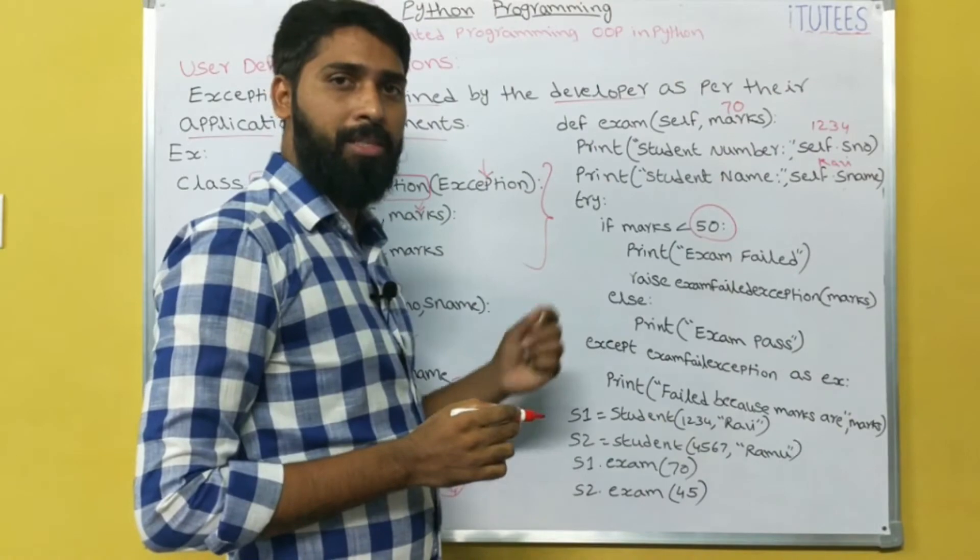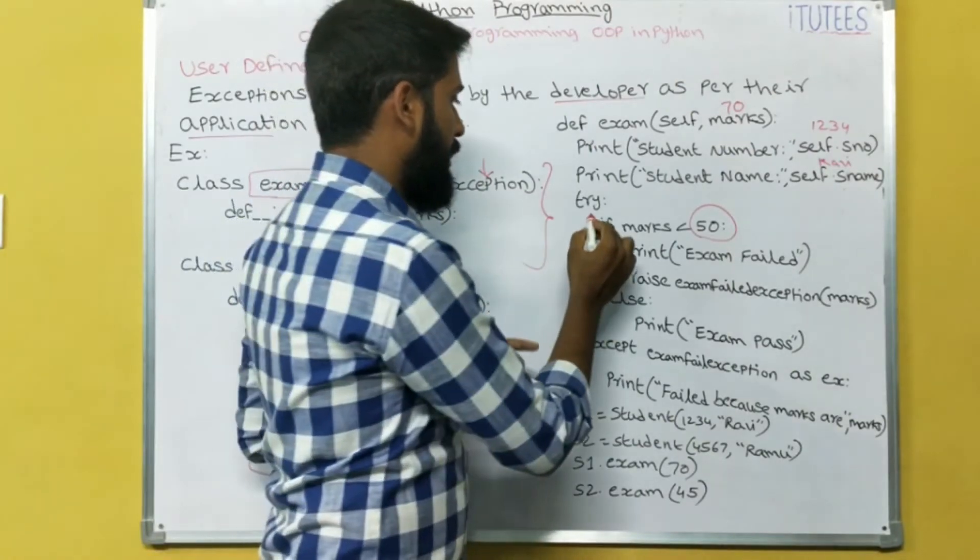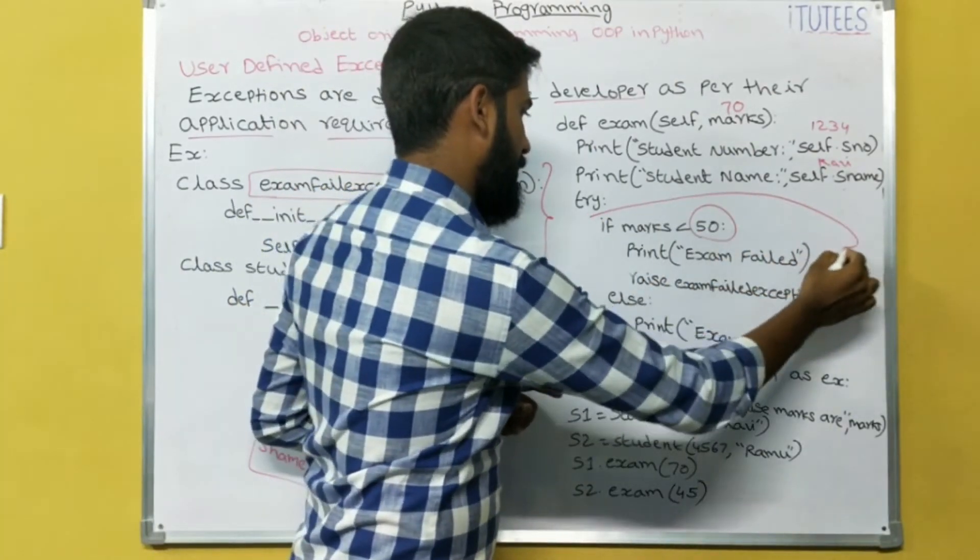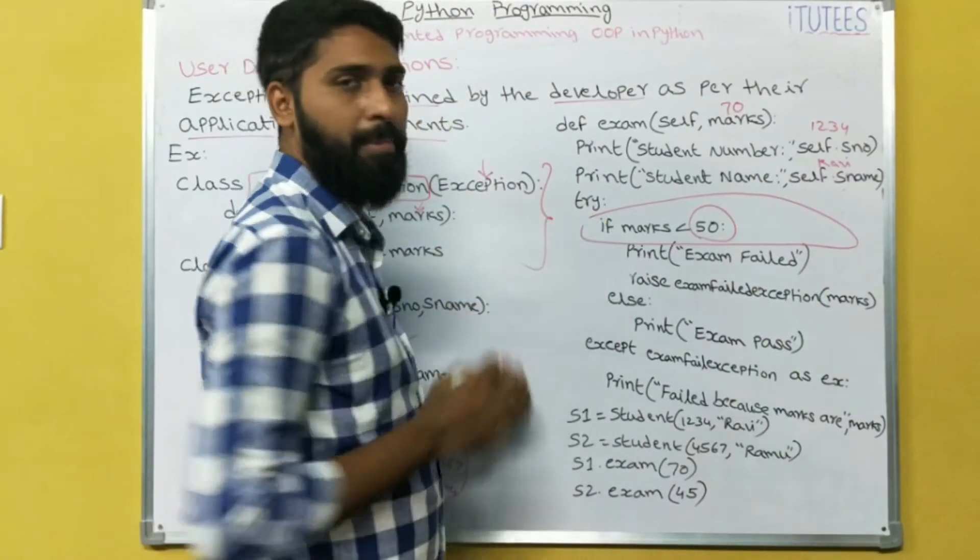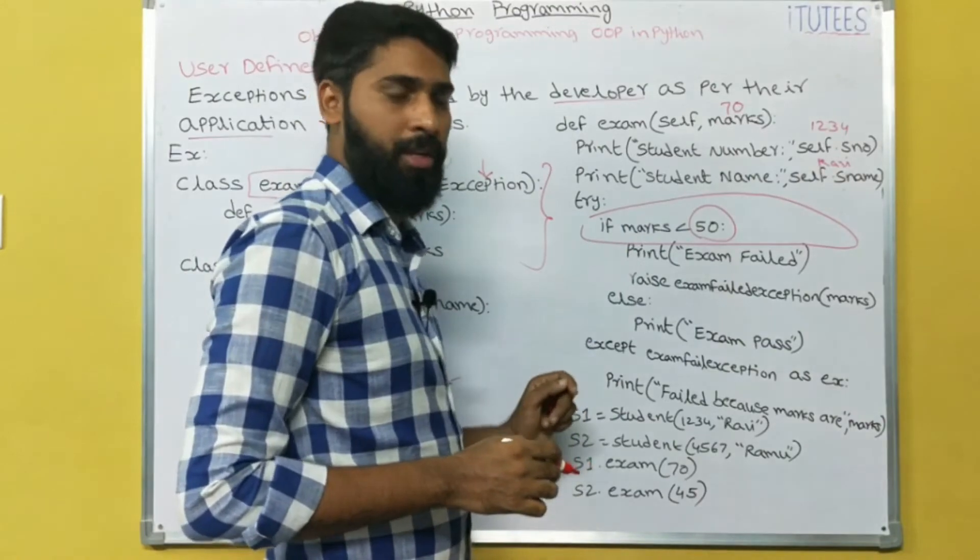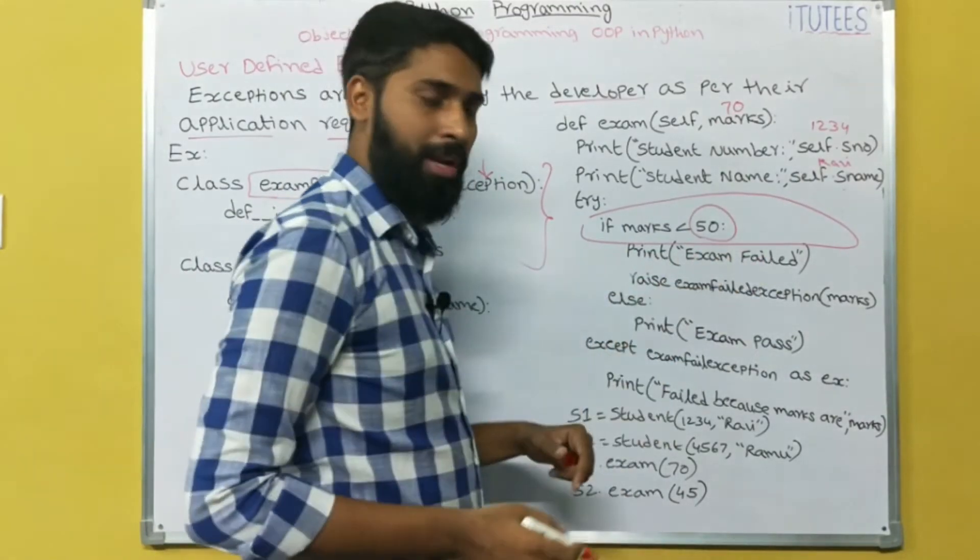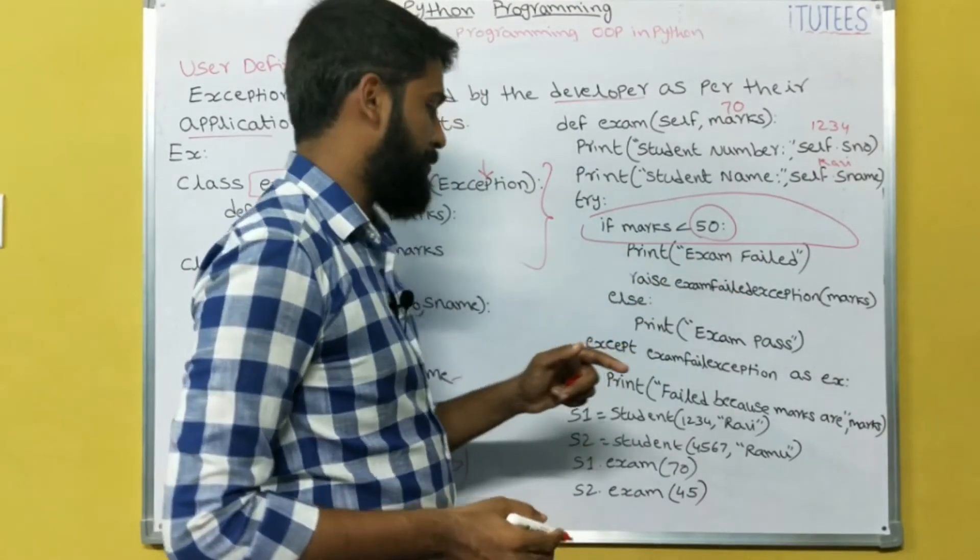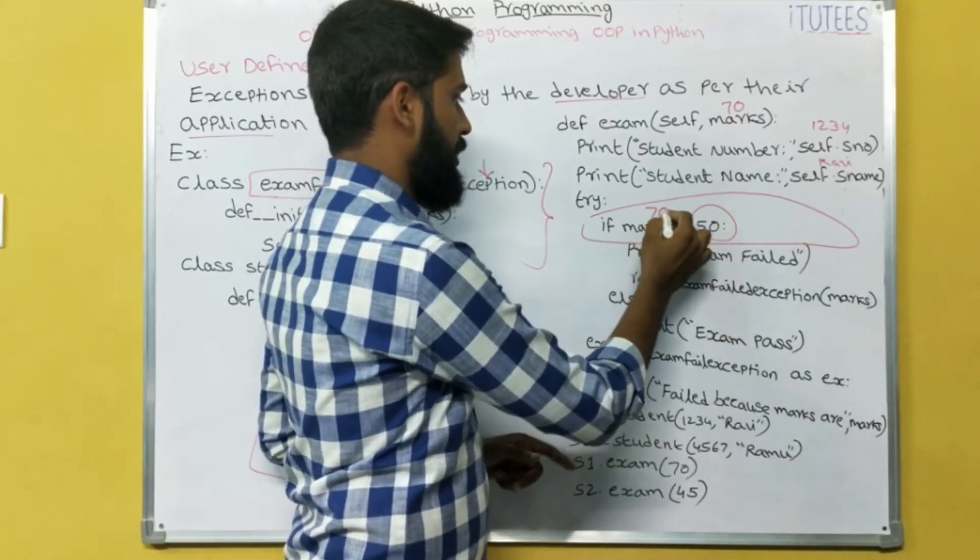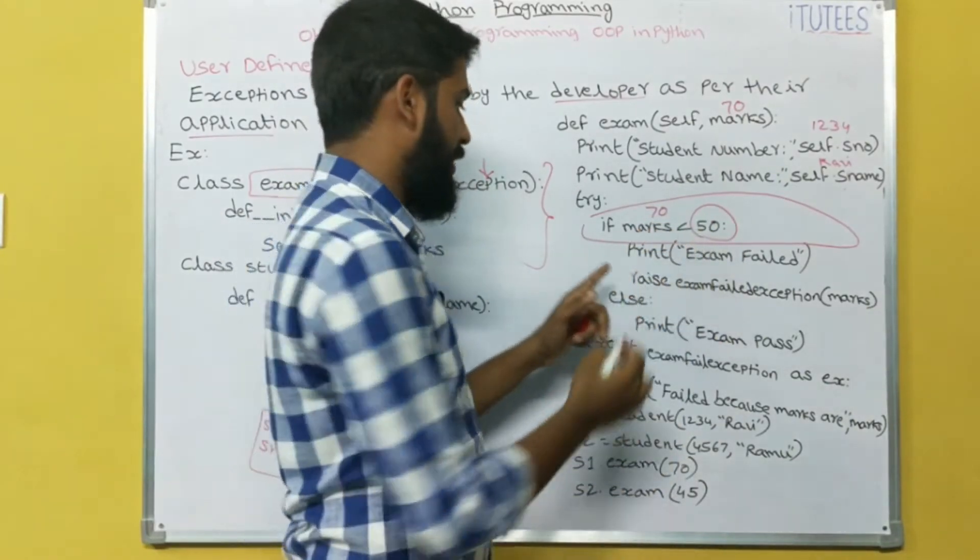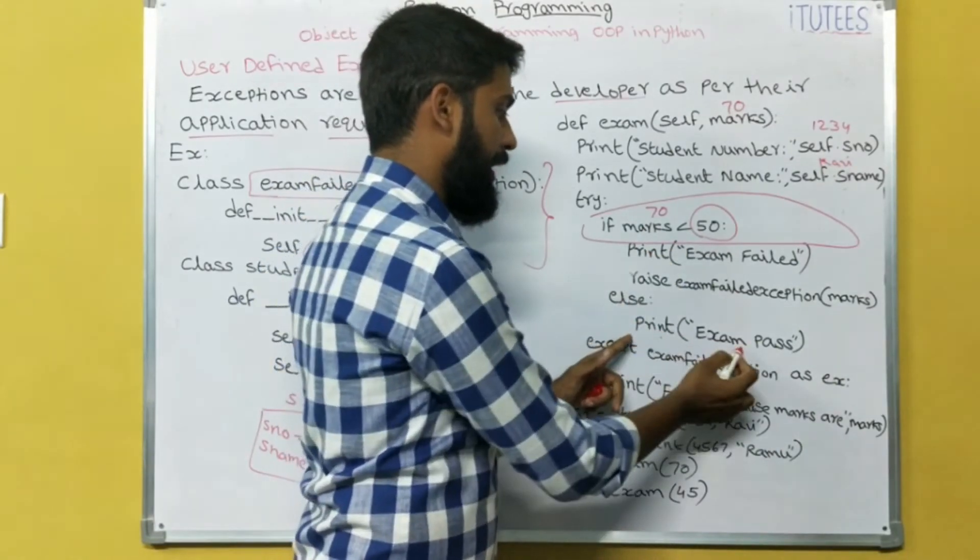As a developer, as a programmer, I think that we get run time error when I am checking the marks. So I can write this code in try block. If marks less than 50, then print exam fail and raise the exception. But here the marks are 70. 70 less than 50? No. We go to here, print exam pass.